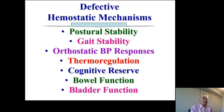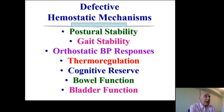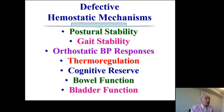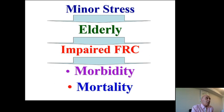Defective homeostatic mechanisms in the elderly could affect postural stability, gait stability, orthostatic blood pressure responses, thermoregulation, cognitive reserve, and bowel and bladder function. A minor stress in an elderly patient with impaired FRC could precipitate morbidity or mortality.